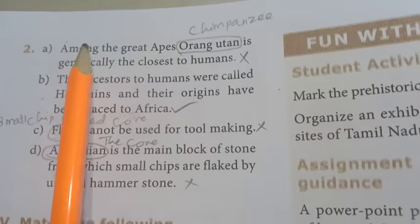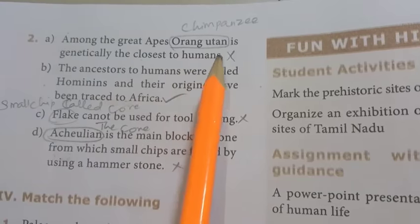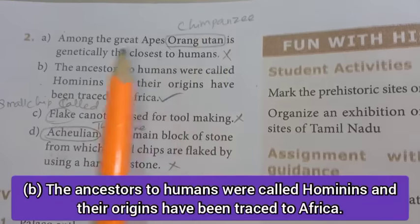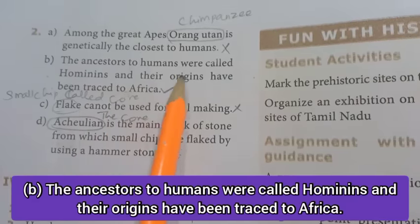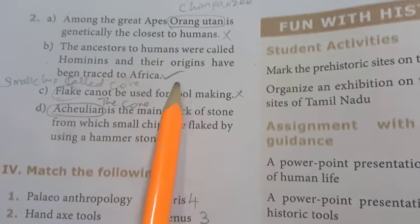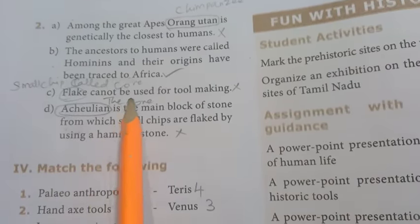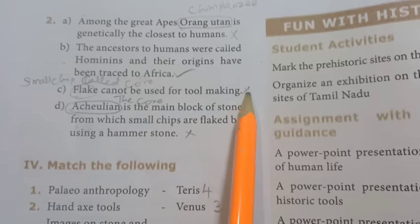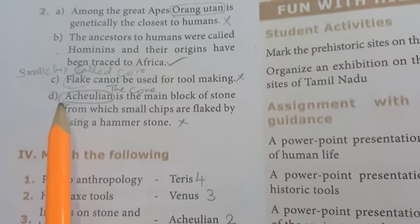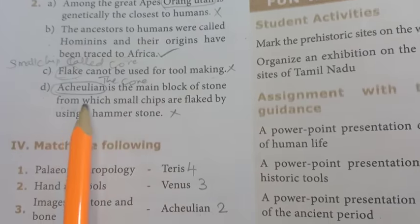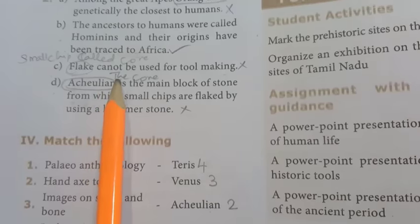Second one: A - among the great apes, orangutan is genetically closest to humans - this statement is wrong; it is chimpanzee. B - the ancestors of humans were called hominins and their origins have been traced to Africa - this is the correct statement. C - flakes cannot be used for tool making - this is wrong; flakes are small chips used in tool making. D - Acheulian is the main block of stone from which small chips are flaked using a hammer stone - this statement is wrong; that is the core, not Acheulian.